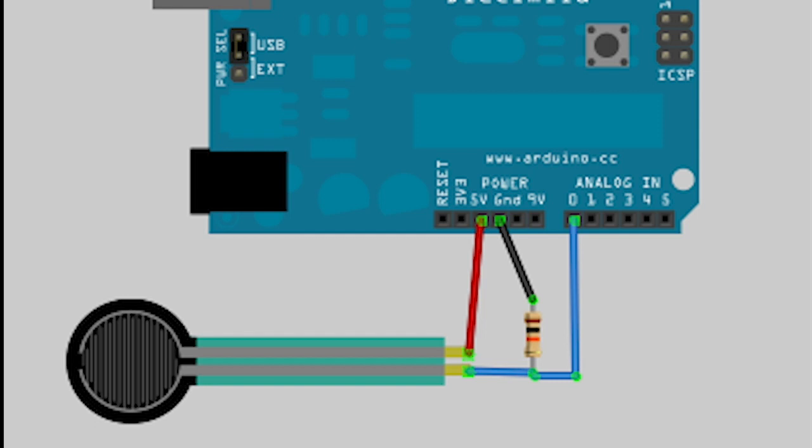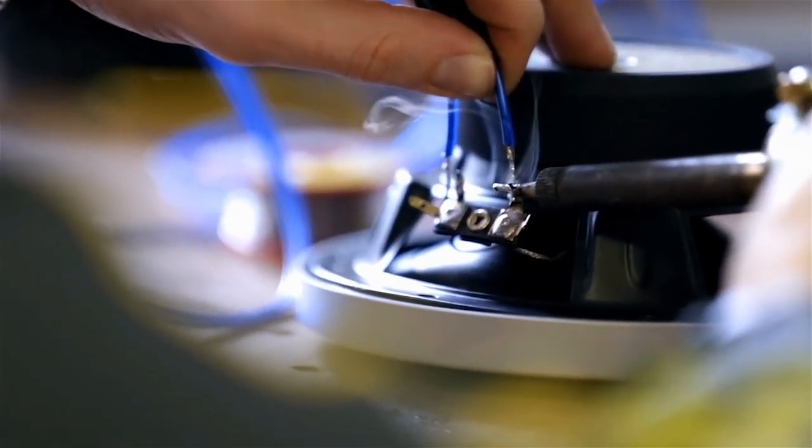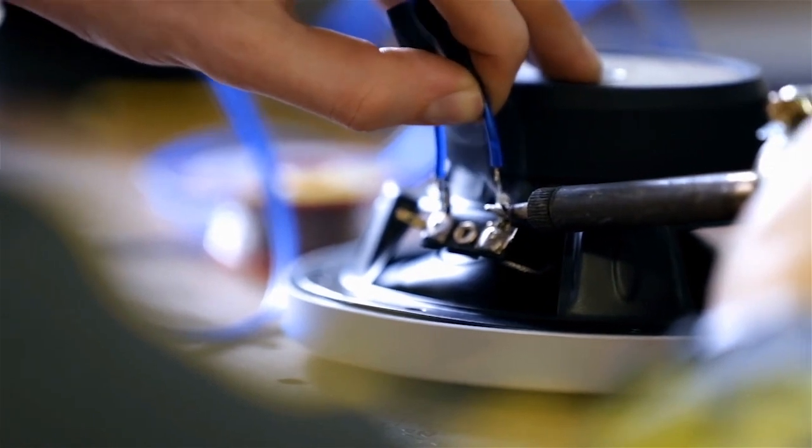The first step is to solder the blue and red cables of an encoder head to the two outputs of FSR. It doesn't matter which goes to which. Be sure to solder it quickly as the heat can easily melt the plastic.